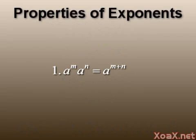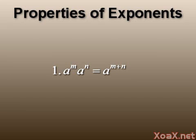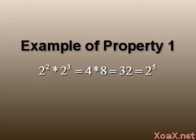Our first property of exponents states that a to the m times a to the n equals a to the m plus n. As an example, 2 to the 2 times 2 to the 3 equals 4 times 8 which equals 32 which is 2 to the 5.